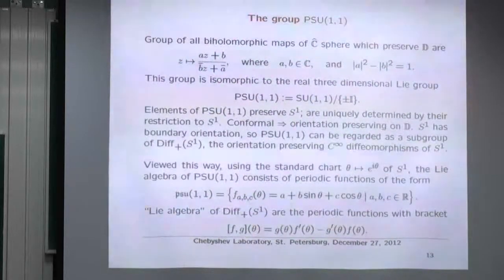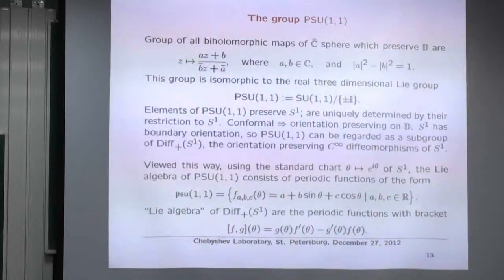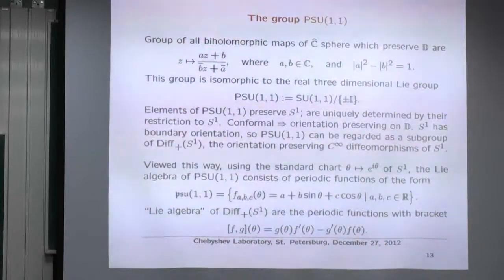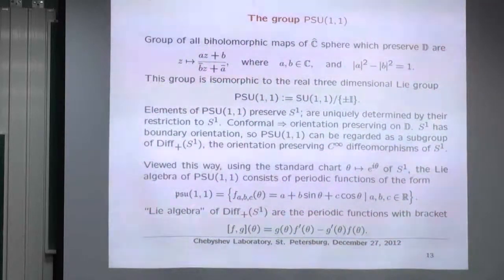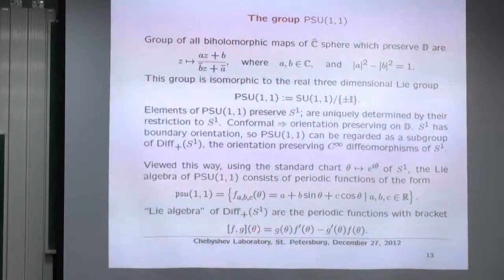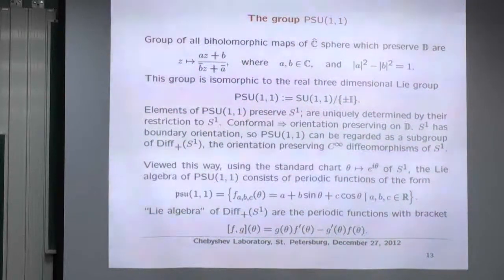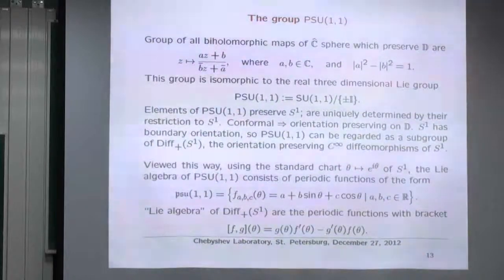Now I change subject to PSU(1,1). To fix notation: it is this group, it has a Lie algebra written in this fashion, and the Lie algebra has the usual bracket of vector fields.